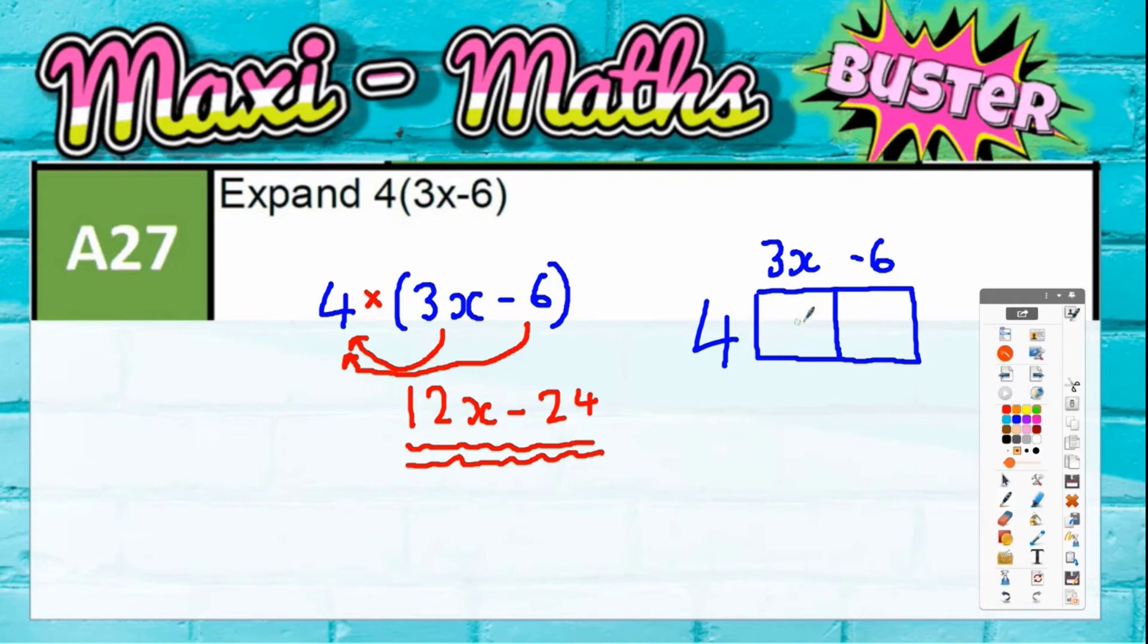To get what goes inside the squares: this box here would be four times 3x. Four lots of 3 is 12, so 4 times 3x is 12x. This box here is 4 times negative 6, which is 24, so 4 times negative 6 must be negative 24. Whichever way you do it, you get the same answer.